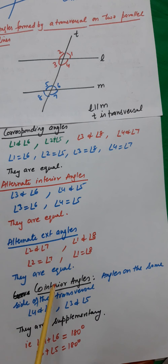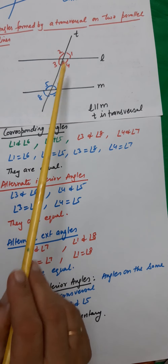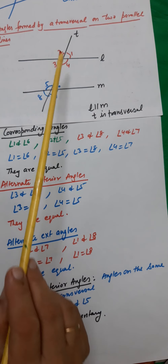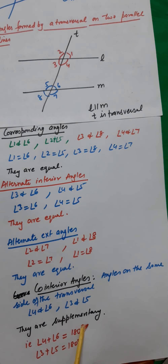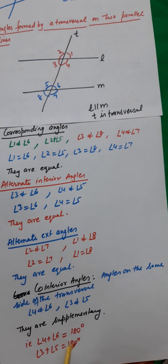There is one more type of angle formed here — co-interior angles. Co-interior angles are the angles formed on the same side of the transversal, like 4 and 6, and 3 and 5. Their property is that they are supplementary — supplementary means their sum is 180 degrees. So angle 4 plus angle 6 equals 180 degrees, and angle 3 plus angle 5 equals 180 degrees.